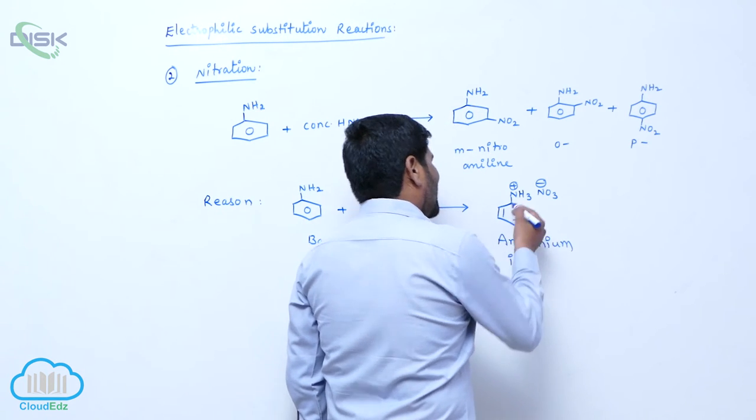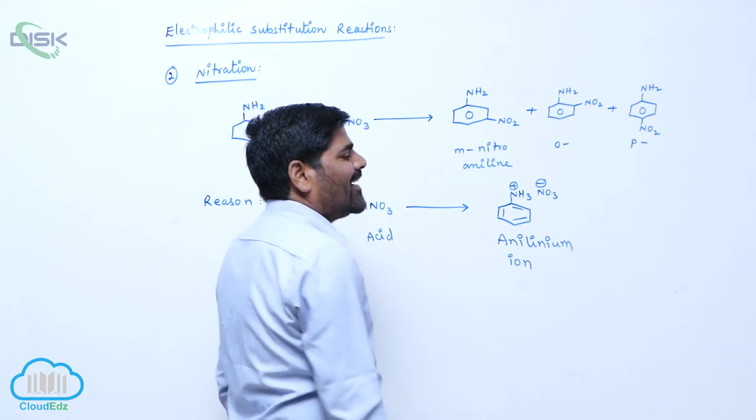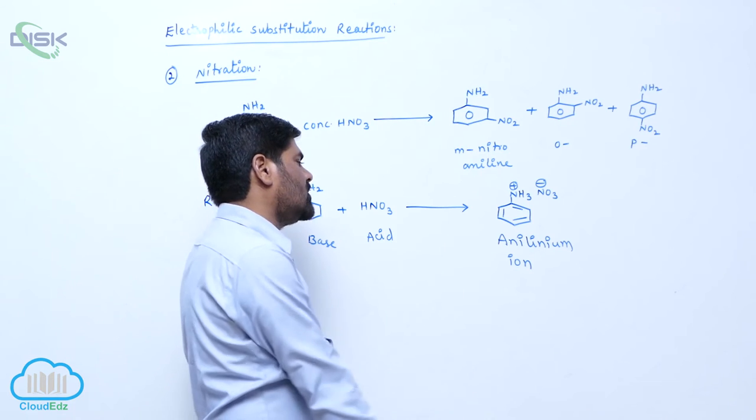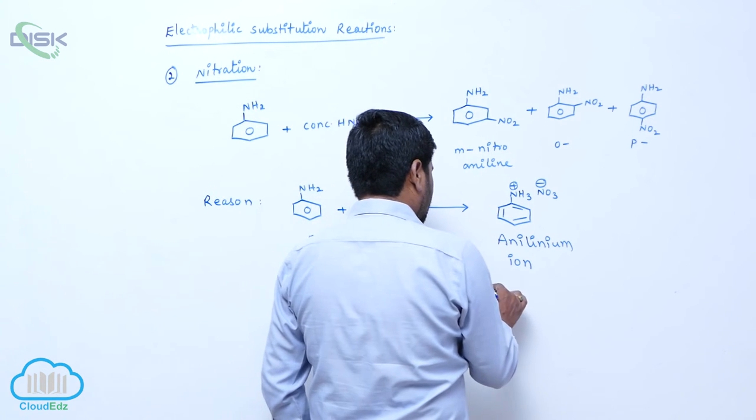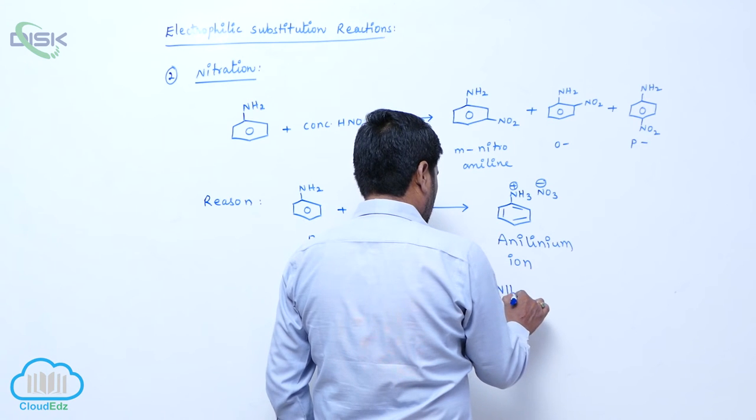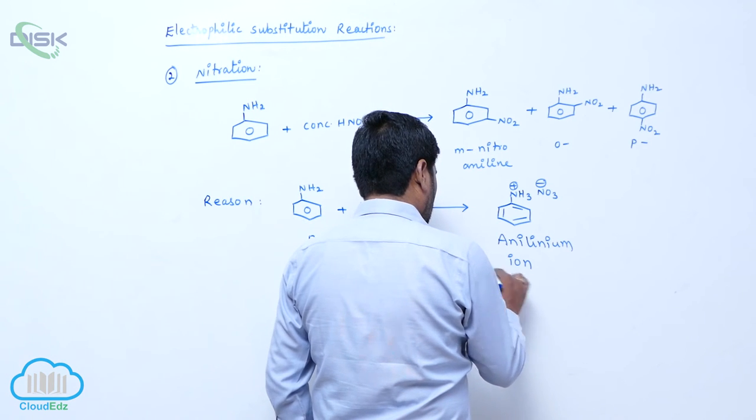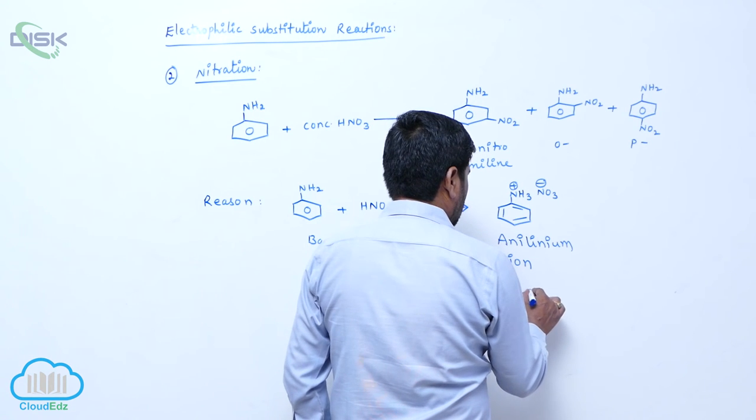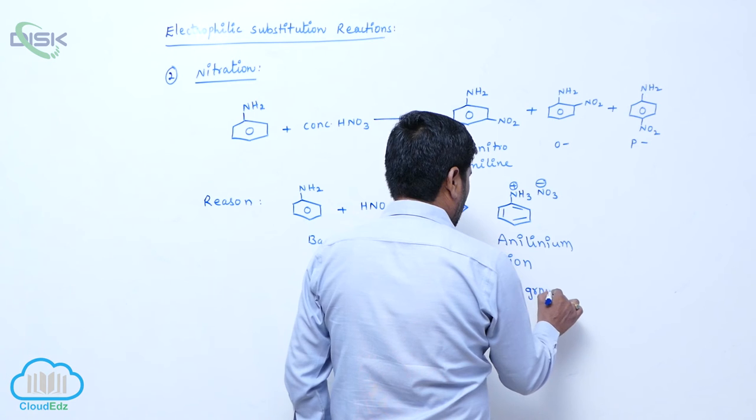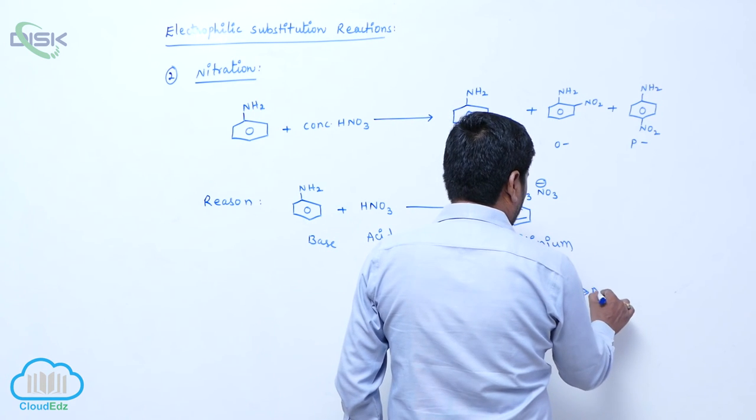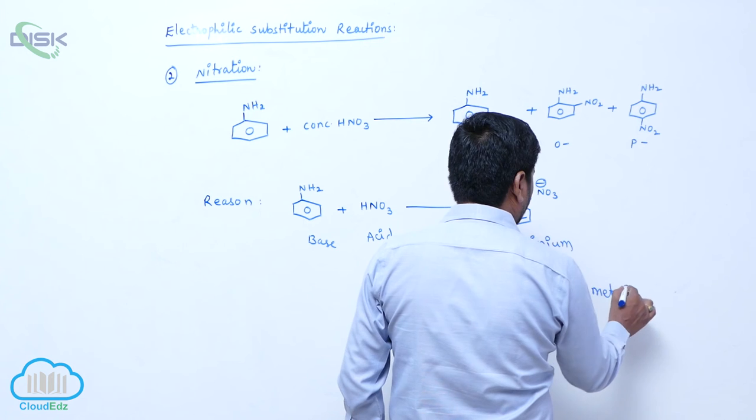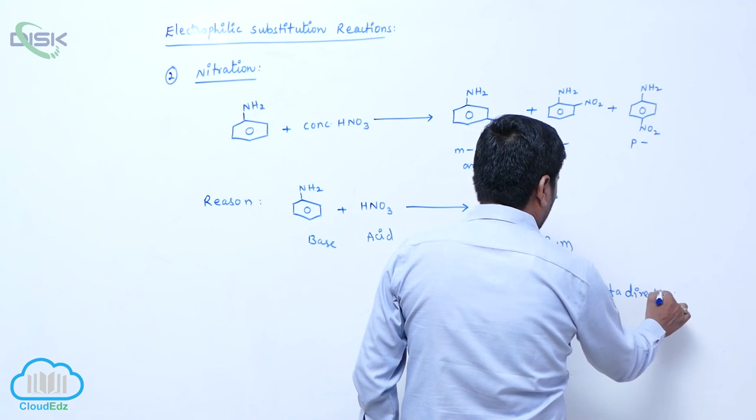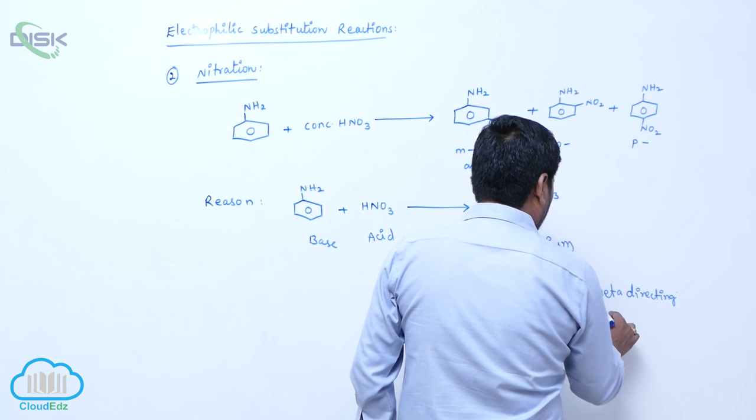Now on benzene ring, this anilinium ion can act as a meta directing group. It can act as what? On benzene ring, on benzene ring, anilinium group NH3 plus acts as a meta directing group, meta directing group, meta directing group.